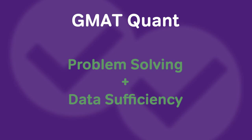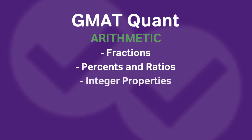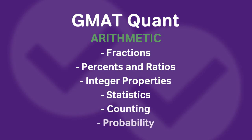Similar to sentence correction, within data sufficiency and problem solving there are several topics we want to be prepared for. The three big umbrellas on GMAT math are arithmetic, elementary algebra, and geometry. Starting with arithmetic, there are things we expect here, like fractions, percents and ratios, and integer properties. But arithmetic also encompasses statistics, counting — sometimes known as permutations and combinations — and probability. These are going to show up on your test day guaranteed, not in huge numbers, but they will be there.